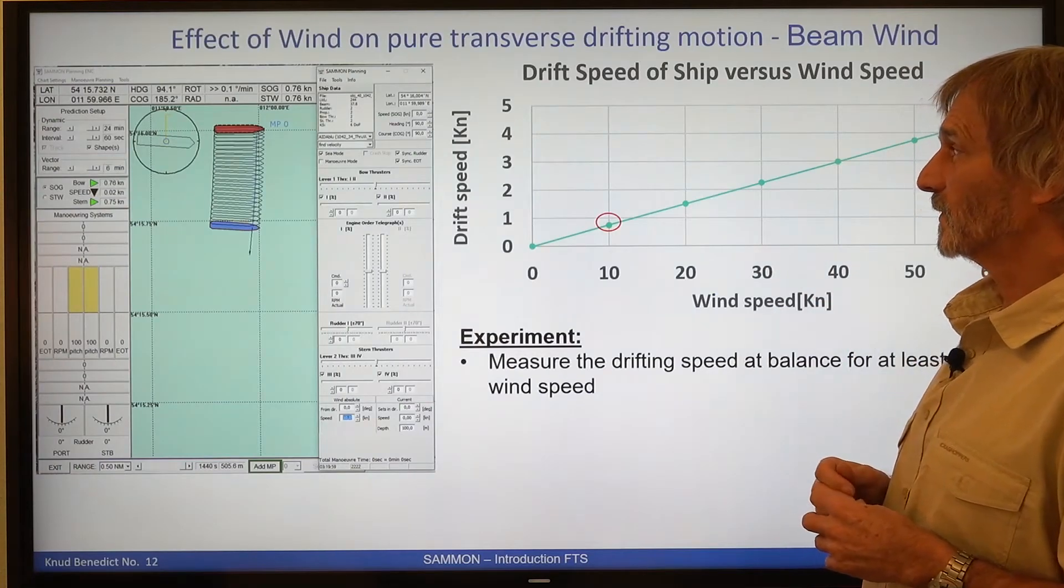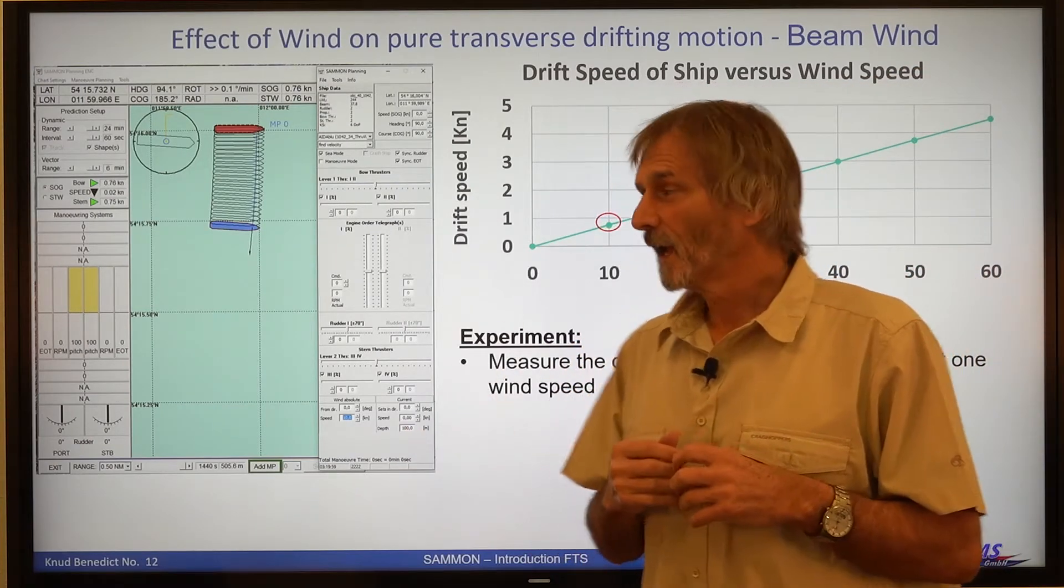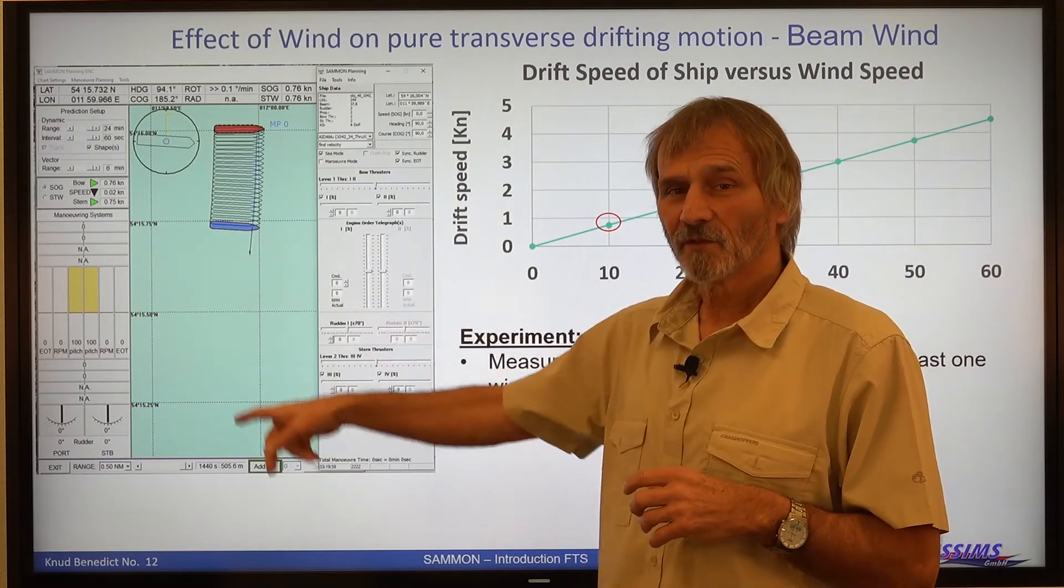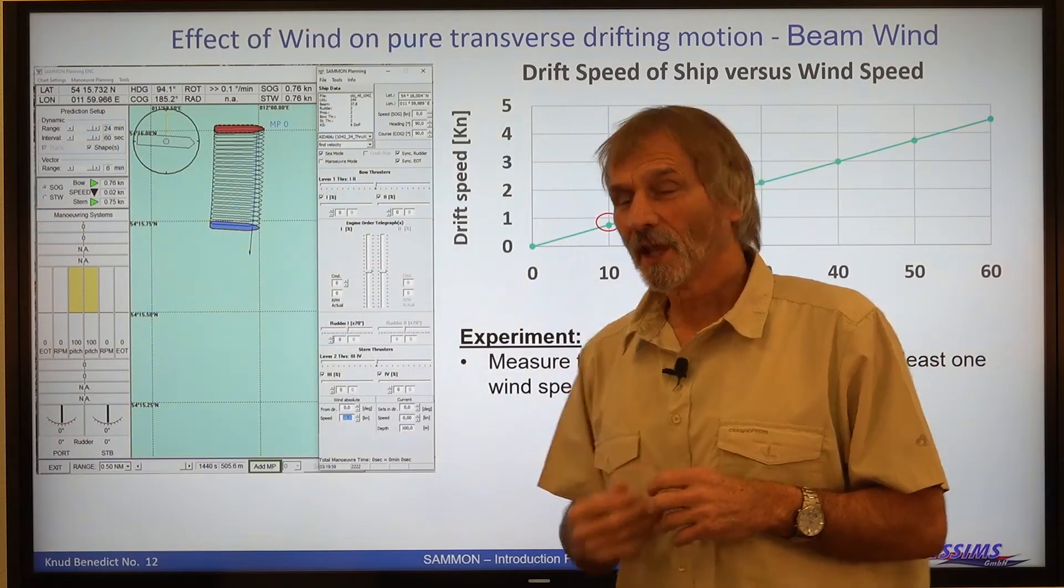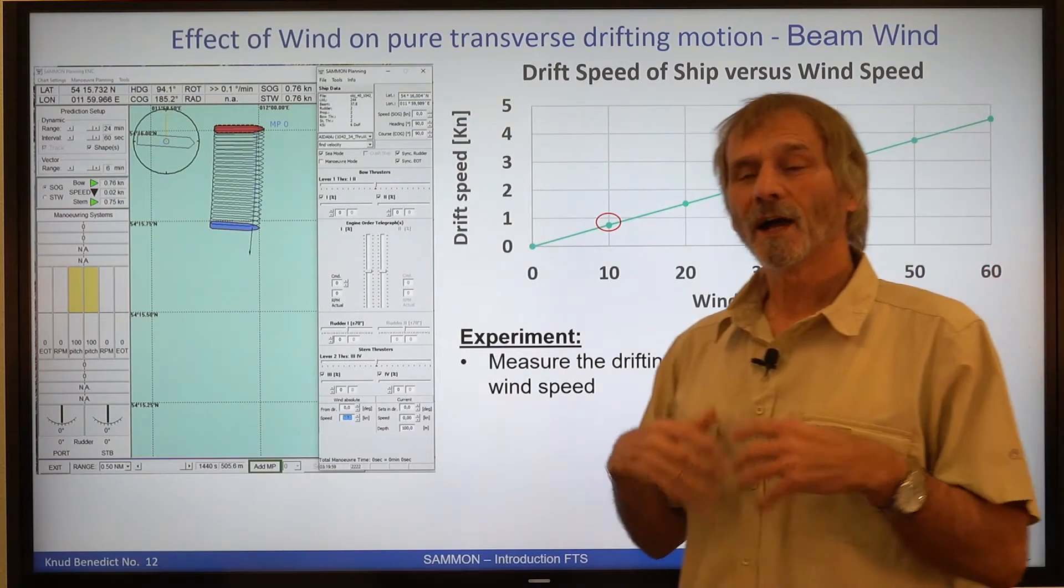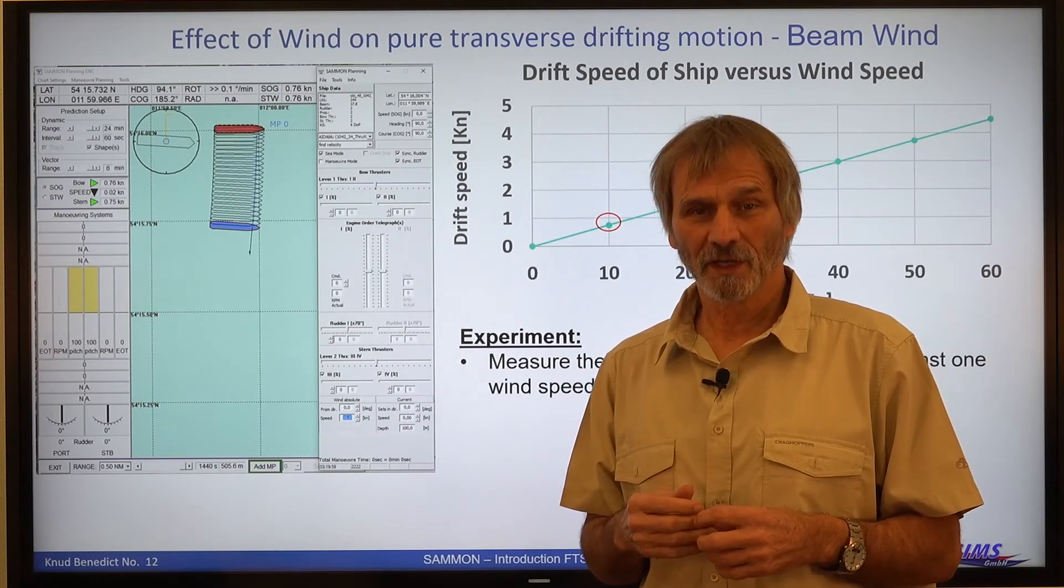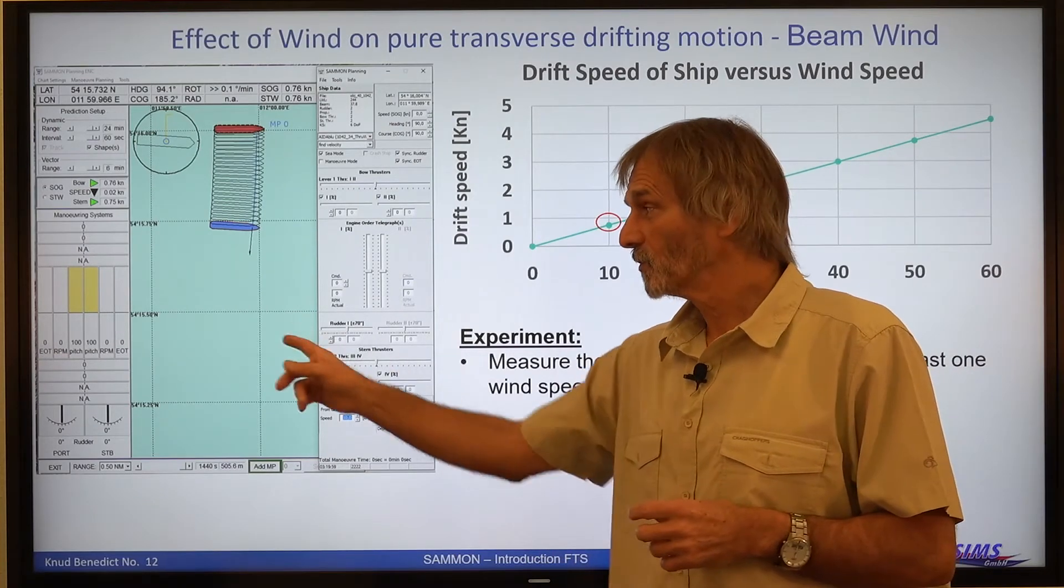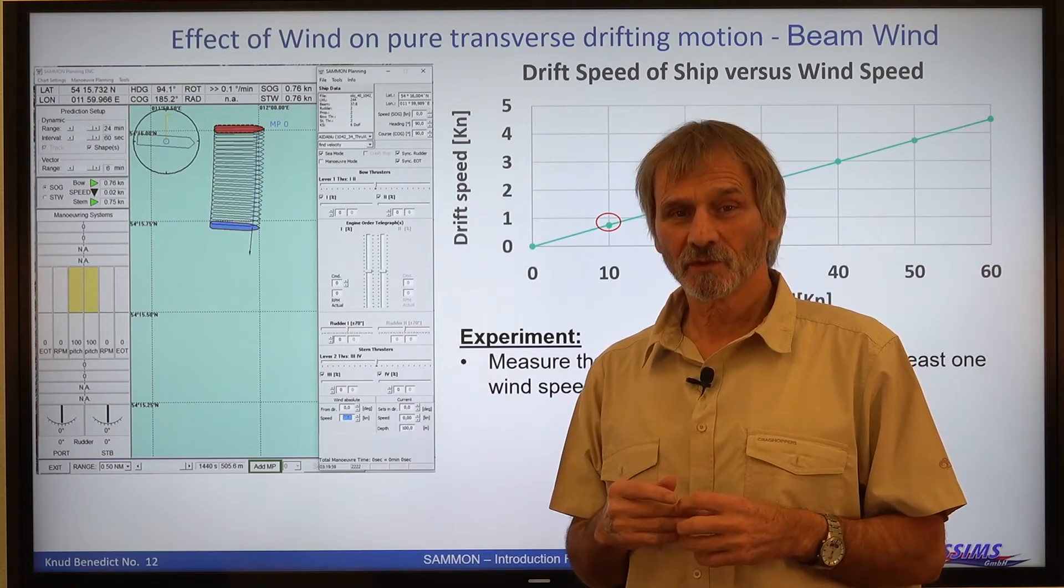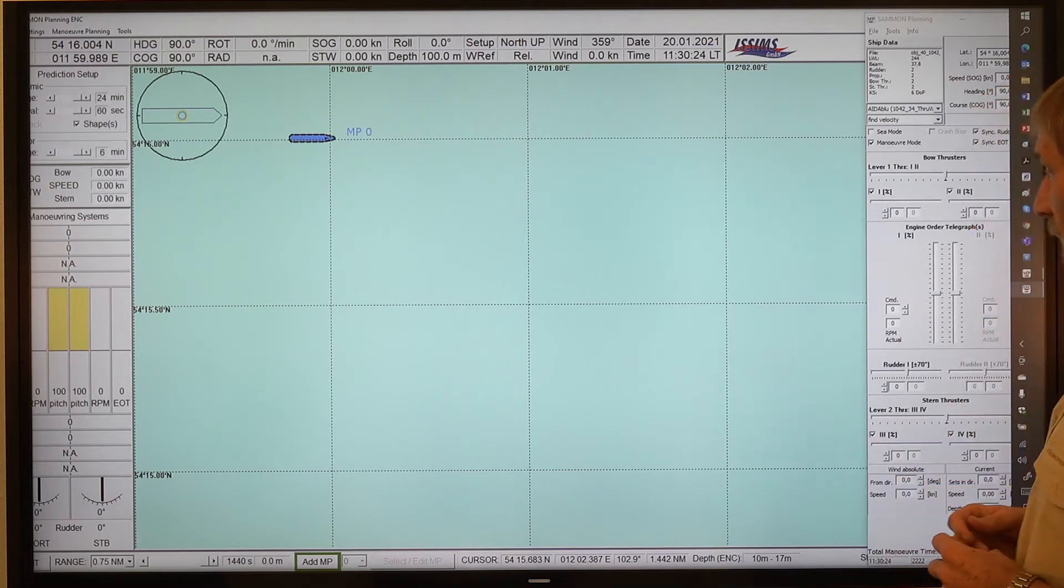So to give you some information how we'll do that, I will do some experiments for drifting speed and enter these data in a sort of diagram to afterwards estimate what is the average drift speed under wind. And for this I will use this SAMMON planning tool. This is our ship. It's again a passenger, a cruise ship.